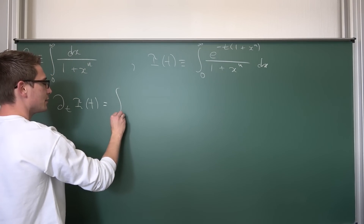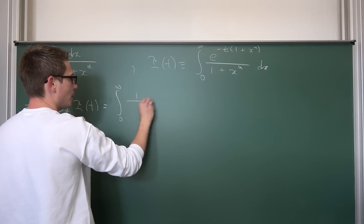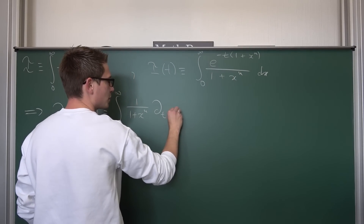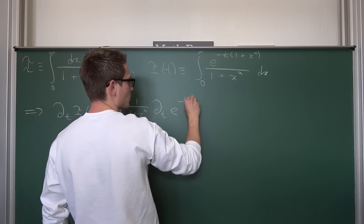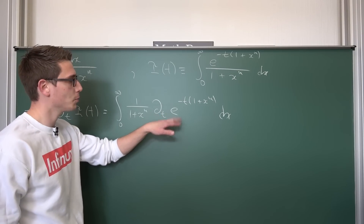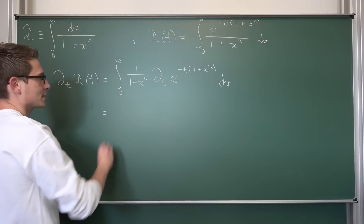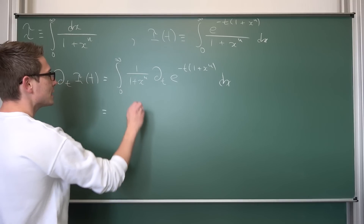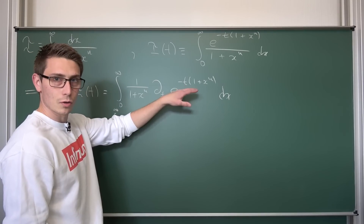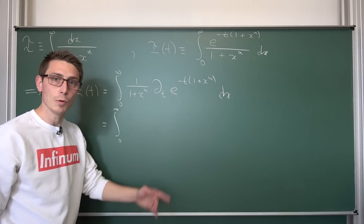We drag the derivative inside, leaving us with the integral from zero to infinity. Now 1 over 1 plus x to the nth power is completely independent of t, but our exponential function obviously depends on t — hence the introduction of the parameterization in the first place. We now apply the differential operator to the exponential function. Differentiating an exponential is extremely easy, and we are going to use the chain rule: the exponential is preserved and then we differentiate our exponent with respect to t.